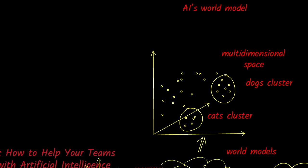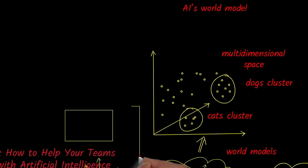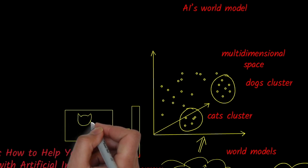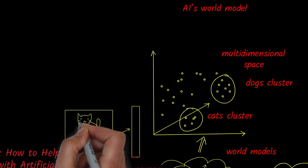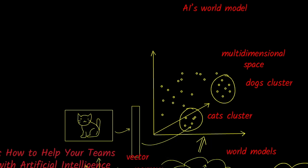This clustering helps AI systems recognize patterns. So if you show an AI a picture of an animal, it can place that image in the vector space and figure out which cluster it is closest to. That's how it can identify a cat.